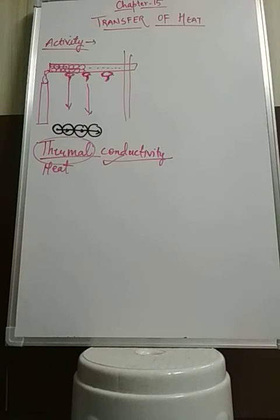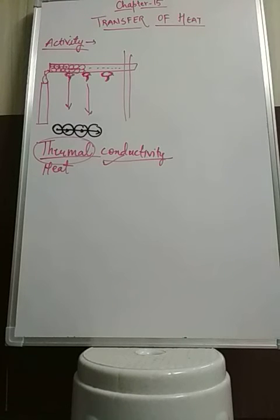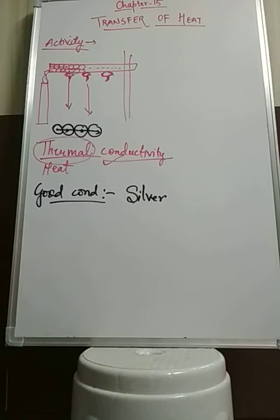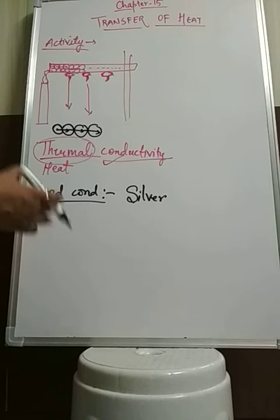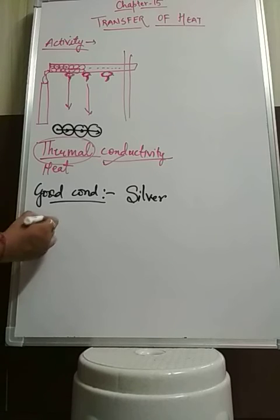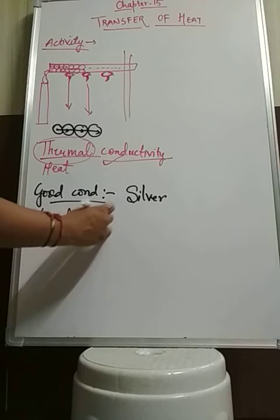A good conductor is one that allows heat to pass through it easily. Silver is known as the best conductor of heat — it can conduct heat very fast. Other examples are copper, aluminium, and iron. They can easily pass the heat. Bad conductors, also known as insulators, do not conduct heat at all. For example, if you have seen the handles on a pressure cooker or any non-stick pan, those handles are bad conductors of heat — they do not pass heat from one end to another.